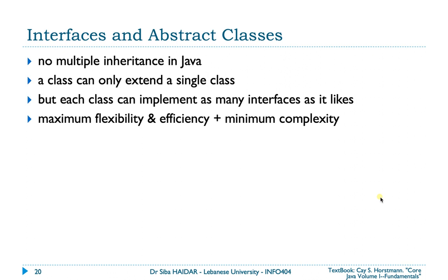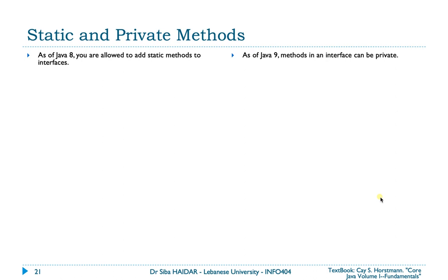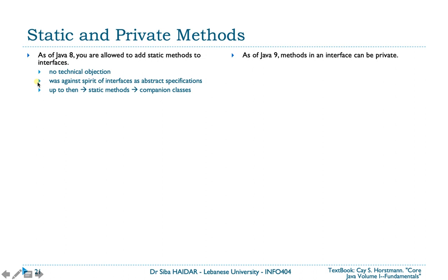We move now to static and private methods. As of Java 8, you are allowed to add static methods to interfaces, and as of Java 9, methods in an interface can be private. From the beginning there was no technical objection preventing static methods inside interfaces, but the Java designers didn't allow it because it was against the spirit of interfaces as abstract specifications. Every static method was instead included in a companion class.